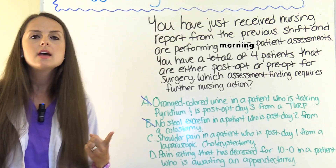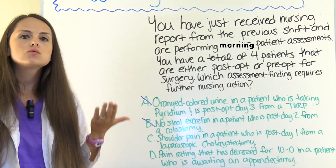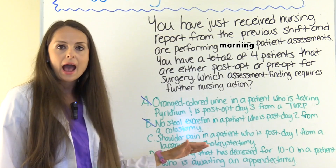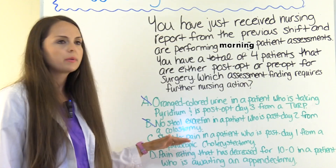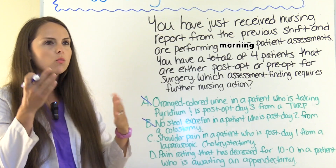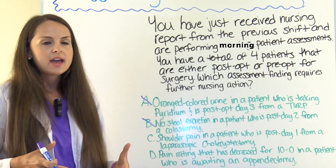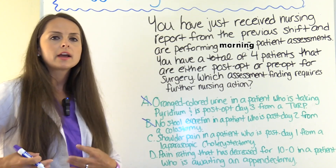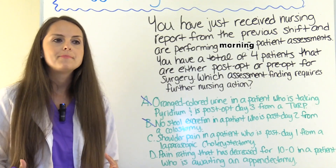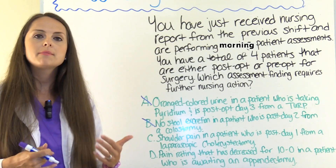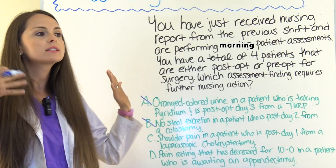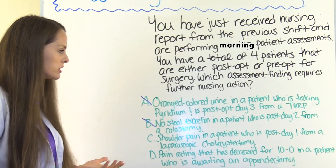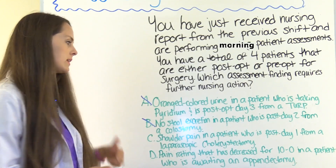Option C: this patient is post-op day 1 from a laparoscopic cholecystectomy — removal of the gallbladder. The key word is laparoscopic. During this procedure, they inflate the abdomen with carbon dioxide to pull the abdominal wall away from the organs so they can operate. Post-op days 1, 2, or even 3, the patient may develop shoulder pain as that carbon dioxide diffuses through the system. This is normal — the patient needs reassurance. Without this nursing knowledge it might seem alarming, but given it was laparoscopic, it's expected.